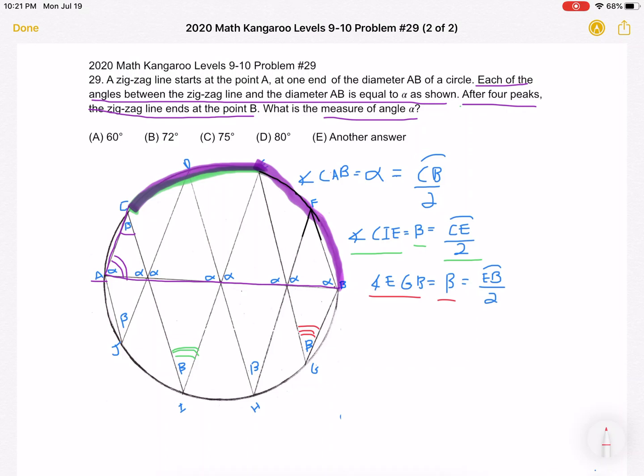And what does that open up to? It opens up to arc EB. So we can write it as, that measurement must be equal to EB over 2. And that is this arc right here. So now you can already see what's going on. The green plus the red is equal to the purple marked arcs. So we can come up with a relationship.